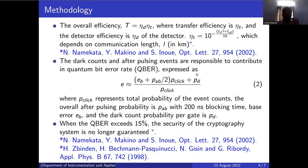these are the main contributing factors — dark count and after-pulsing events — that are responsible for the quantum bit error rate. Equation 2 handles all these problems and generates the quantum bit error rate. Here, P-click represents the total probability of event counts. The overall after-pulsing probability is P-AP with 290 seconds of time. E-V is the base error and E-D is the dark count probability per unit. When 15% or more than 15% QBER is reached, there is no security. We achieve within 11% in the simulation results.